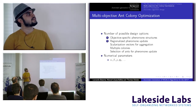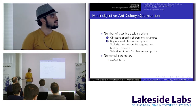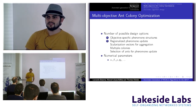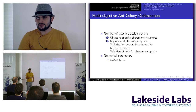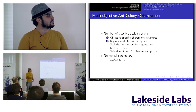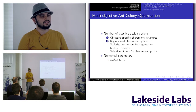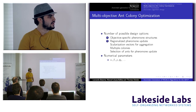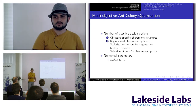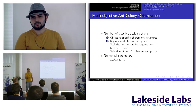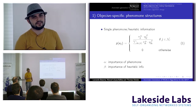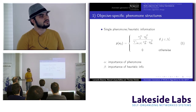In multi-objective ant colony optimization, you enlarge the number of design factors. For example, you can have one pheromone structure for each objective. When updating pheromone you can have multiple colonies instead of just one. There are also different methods for updating and numerical parameters inherited from the metaheuristic. Let me show how large this scope is, starting with objective-specific pheromone structures.